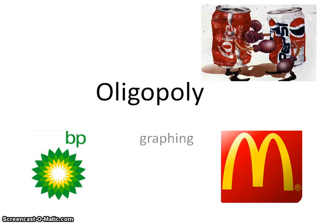This screencast is on our final competitive firm, and this one is the oligopoly. Oligopolies are the most dominant type of competitive structure, and so we find a lot of examples out in the real world that we can use.